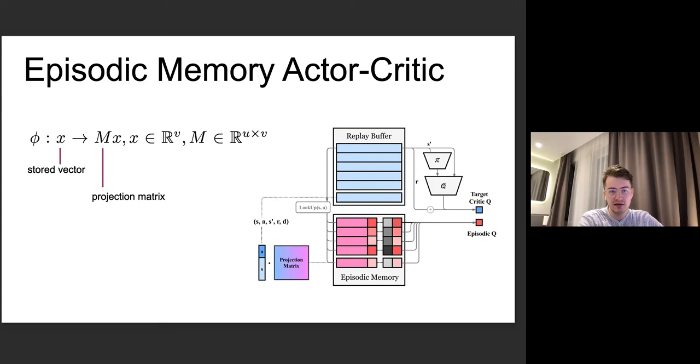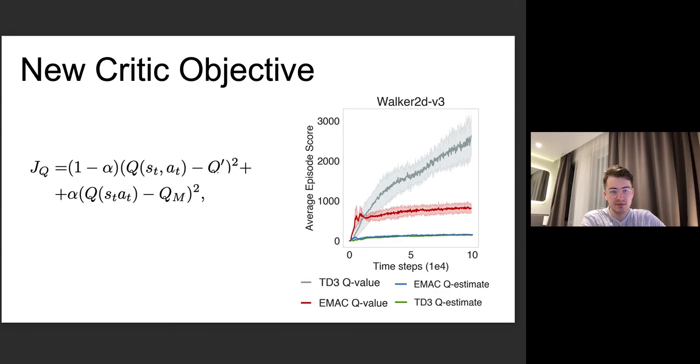This allows us to effectively search for the similar state-action pair in the memory and retrieve Monte Carlo returns. We exploit the memory during the off-policy critic update step. Our new critic objective adds weighted episodic term to the usual critic loss.